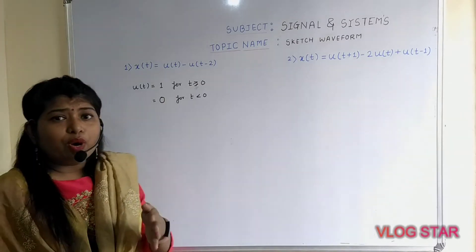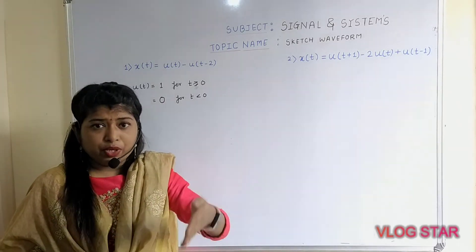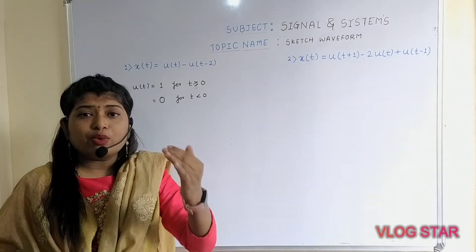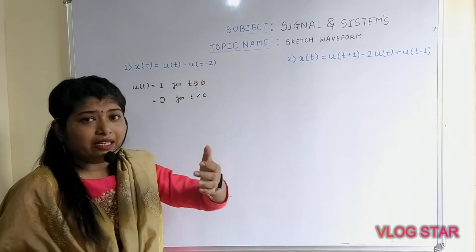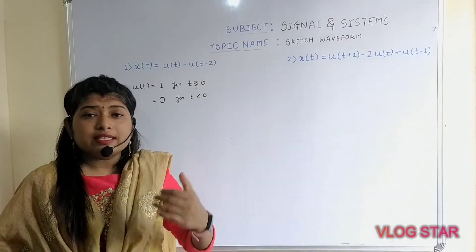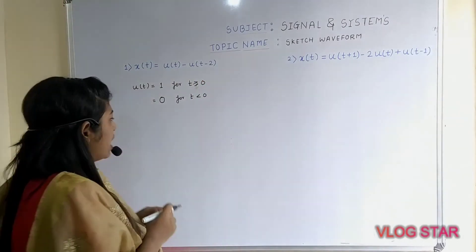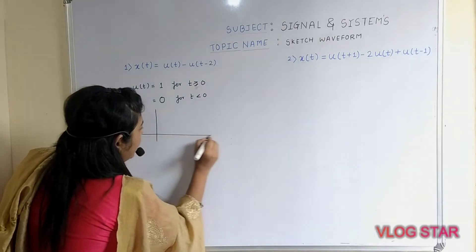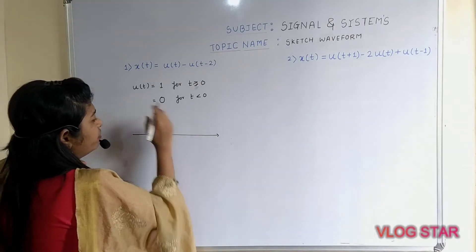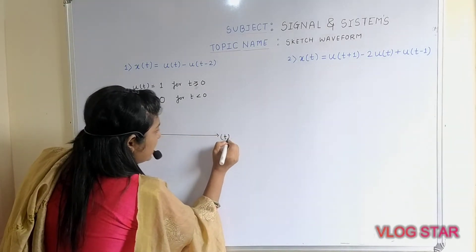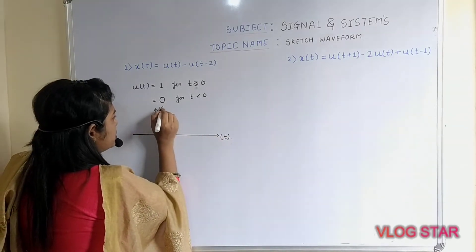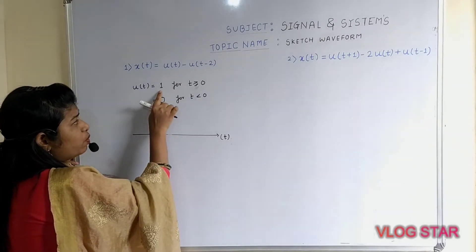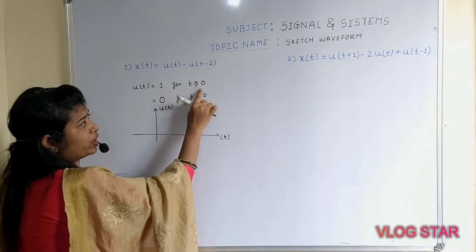Now you need to perform the subtraction between u(t) and u(t − 2) — that is, subtract u(t − 2) from u(t). To sketch the waveform, consider the time axis on the x-axis. As per the definition of u(t), u(t) = 1 for t ≥ 0, and you can sketch the graph accordingly.